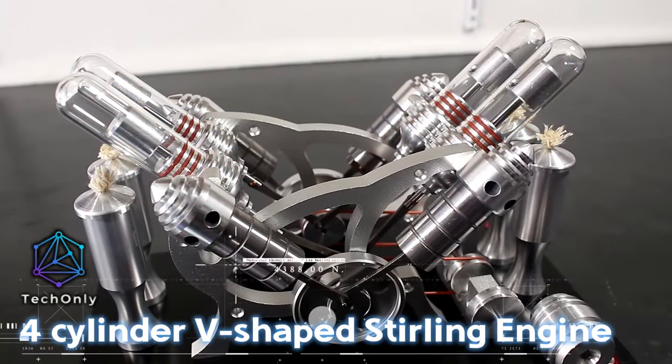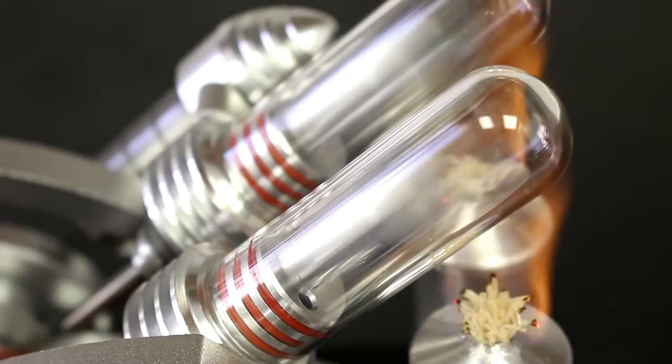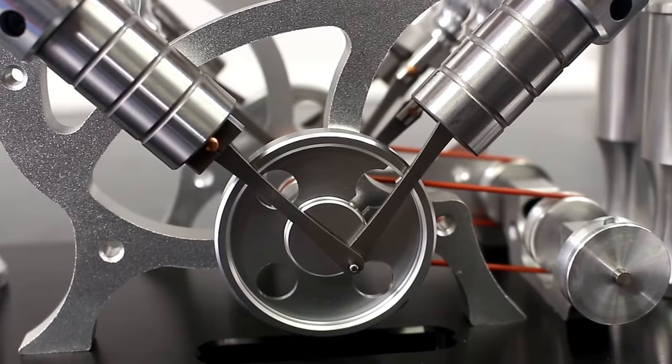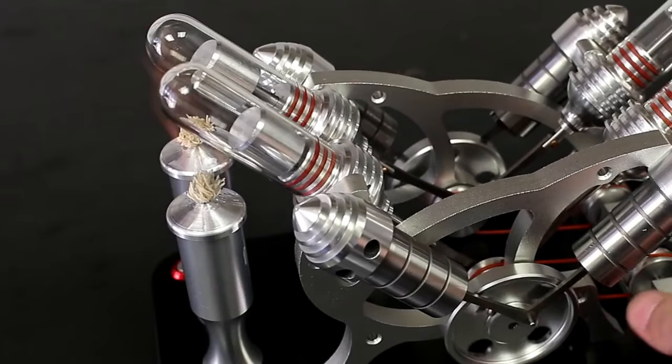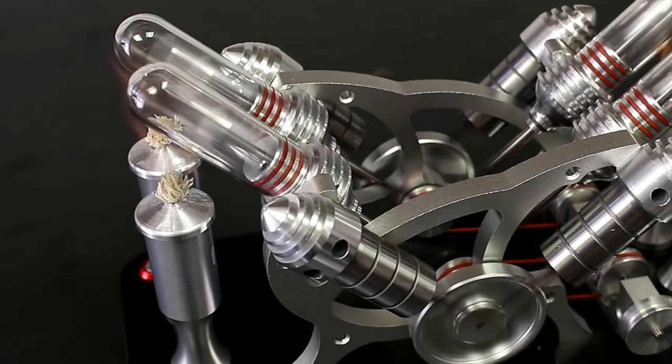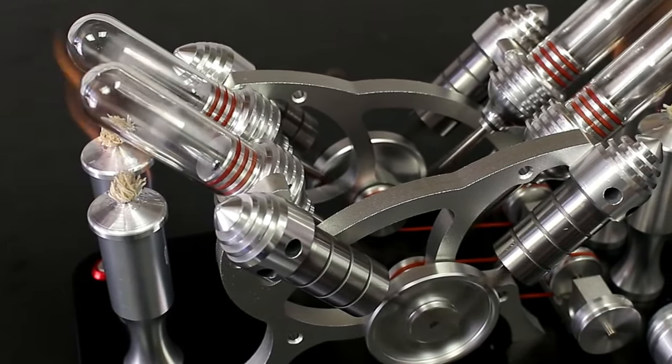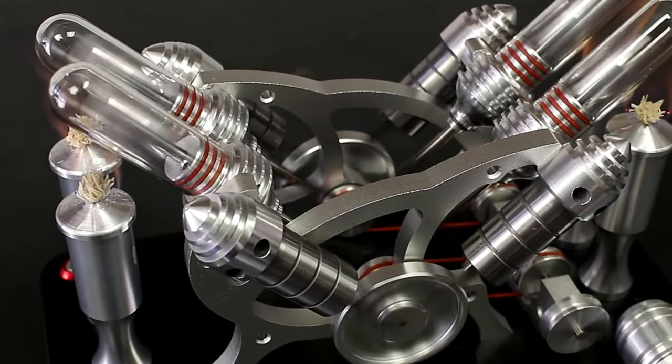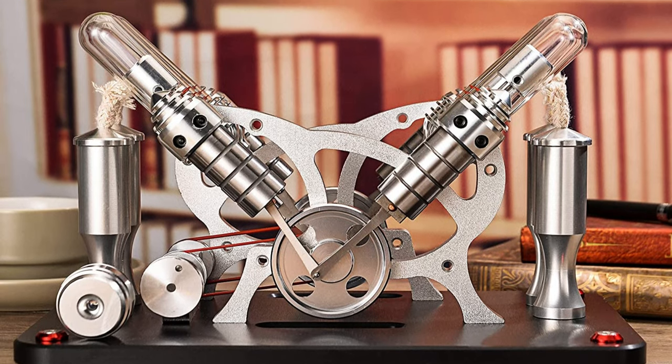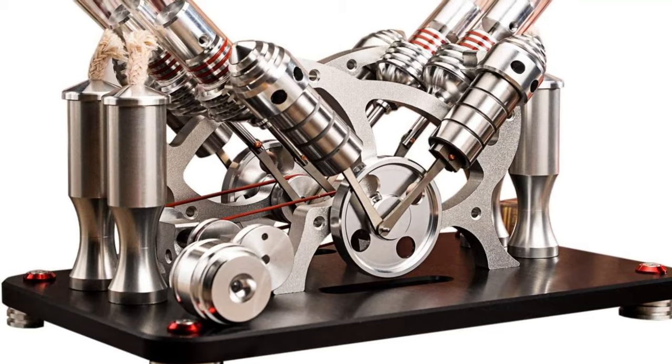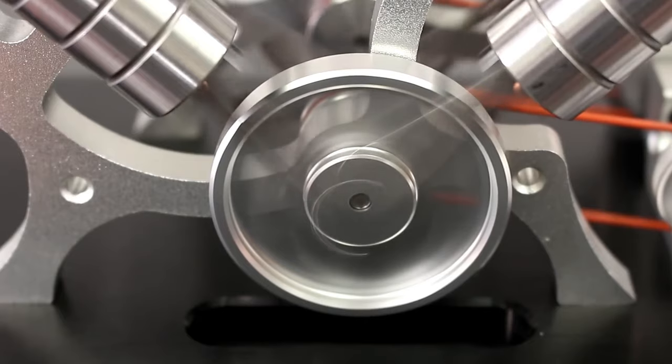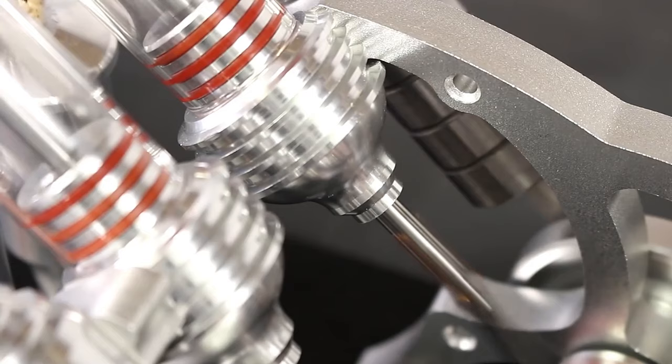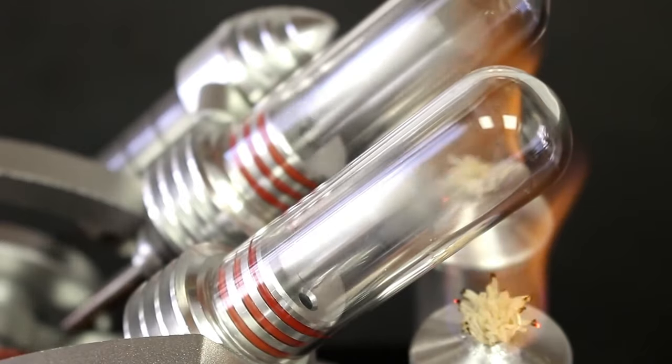This engine is significantly larger than most Stirling engines you can find, weighing in at 5.9 pounds, making it very sturdy and stable while running on a table. The four-cylinder engine is a powerhouse that will leave you amazed. With an output voltage of 4 to 9 volts, its performance is truly impressive. The base, bracket, and two flywheels are crafted from high-strength 6061 aluminum alloy, providing both durability and a sleek appearance.